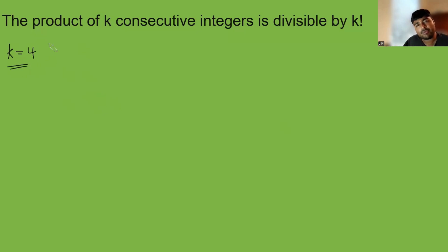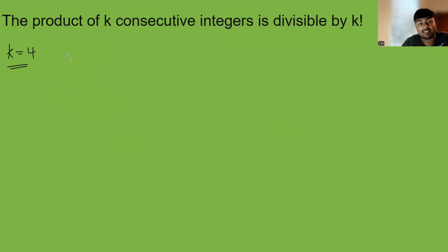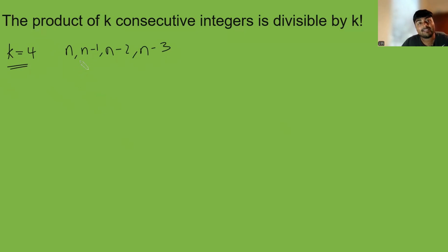How do we prove that the product of 4 consecutive integers is always divisible by 4 factorial? What we're going to do is take our 4 integers, and let's say n is the biggest. So let n, n minus 1, n minus 2, and n minus 3. Now we can assume that n is positive and at least 4.